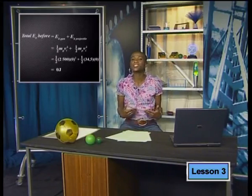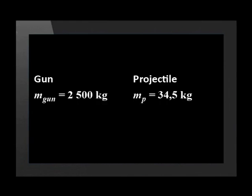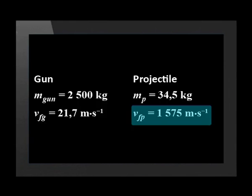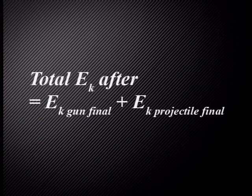But what about after the explosion has taken place? Will the system have kinetic energy then? After the collision caused by the explosion, the masses of the gun and the projectile haven't changed. The projectile is moving at 1,575 meters per second. And the gun is moving at 21.74 meters per second. So the total kinetic energy after the explosion is equal to the final kinetic energy of the gun plus the final kinetic energy of the projectile.